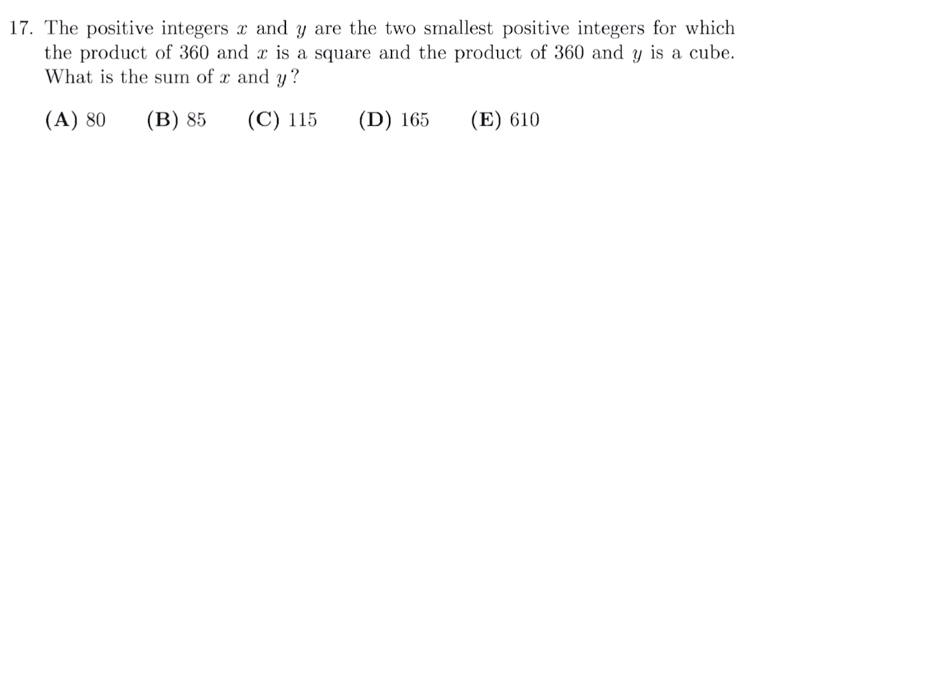The positive integers x and y are the two smallest positive integers for which the product 360 in x is a square and the product 360 in y is a cube. What is the sum of x and y? 360 x is some square, so m squared, and 360 y is some cube, so n to the power of 3.